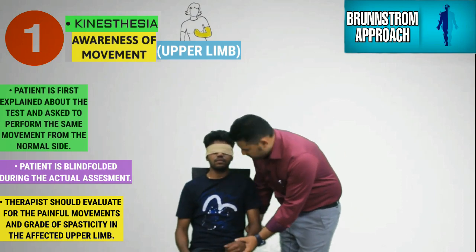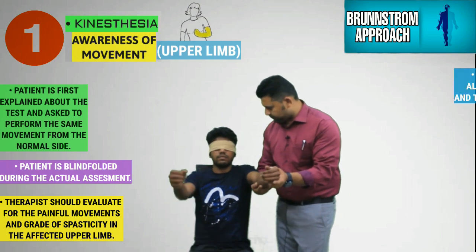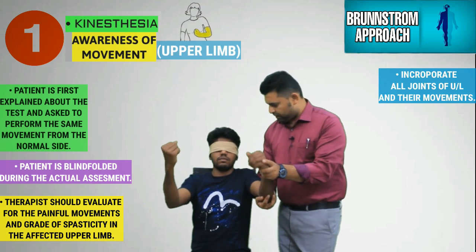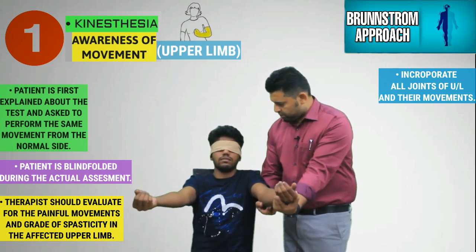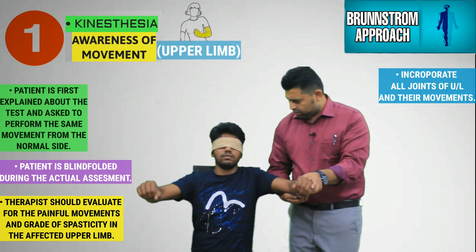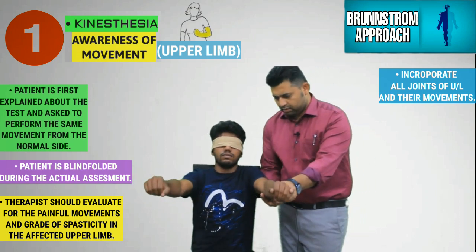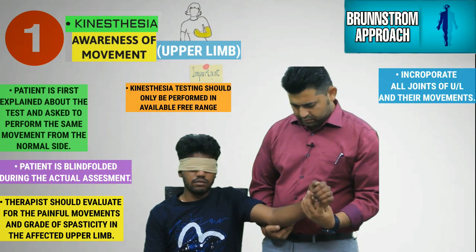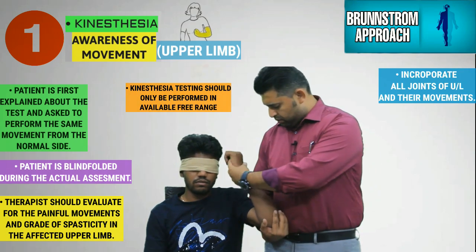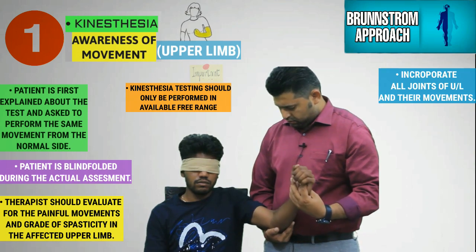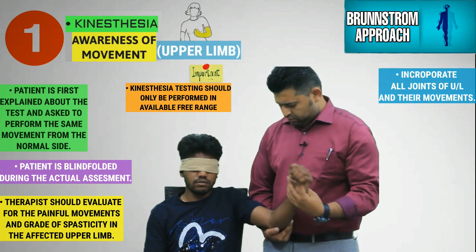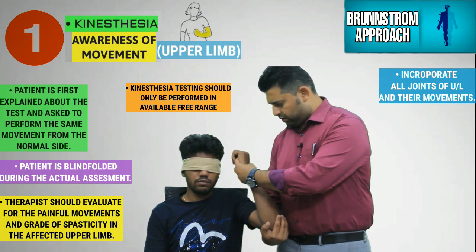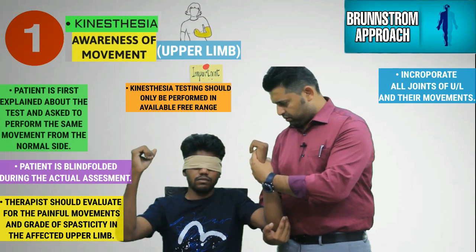The affected upper limb is now moved passively by the therapist into new positions involving movements of the shoulder, elbow, forearm, and wrist joints. The therapist takes utmost care to ensure that painful movements and the stretching of spastic muscles to the point where resistance is felt are avoided during the testing.